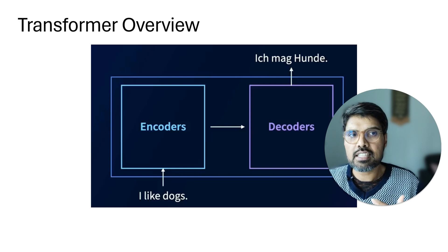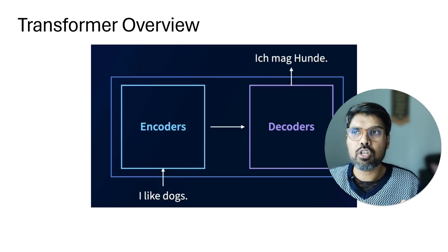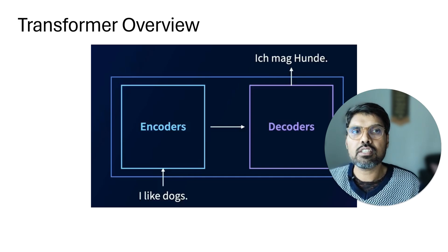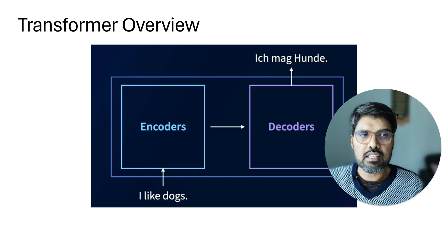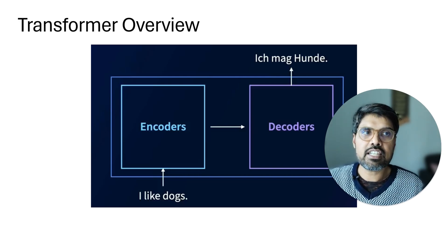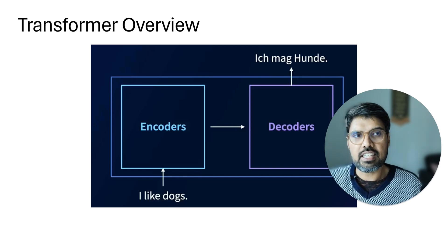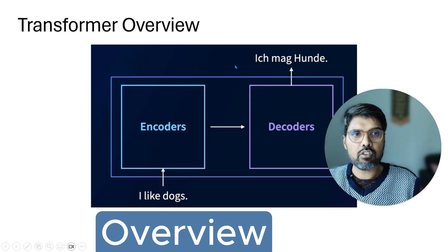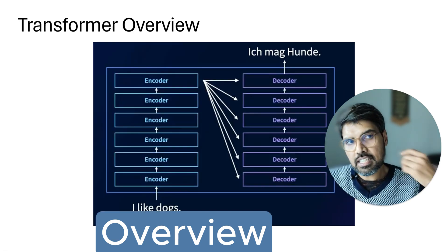Encoders understand the language—they're more focused on understanding what it means when you say 'I like dogs.' Decoders are the ones that do the work and generate text. This is a high-level architecture, but we'll go into a bit more detail.